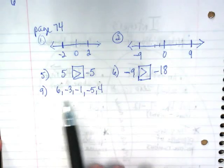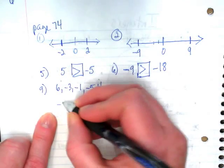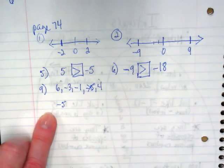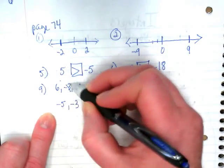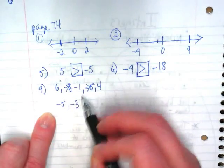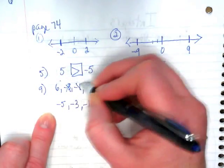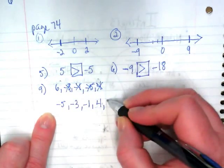Of these numbers, which is the smallest? Negative five is the smallest. And when I do these, I cross them out to make sure I show that I've used that number. Which is the next one? Negative three. We're getting closer to zero as we go up from the negatives, right? And then we have negative one. Positive four. And what's the biggest number here? Six.